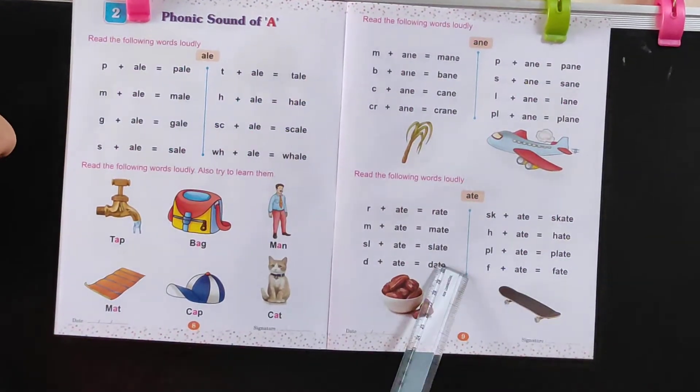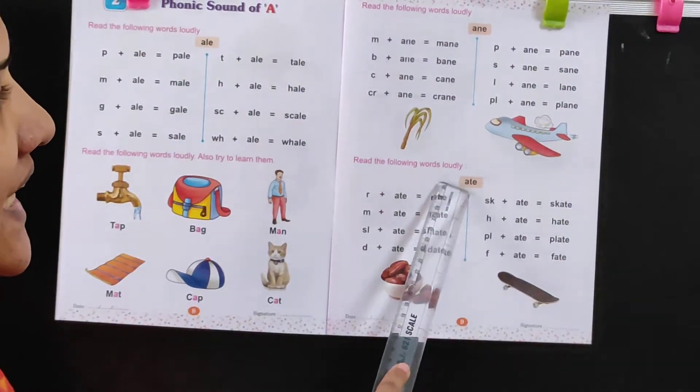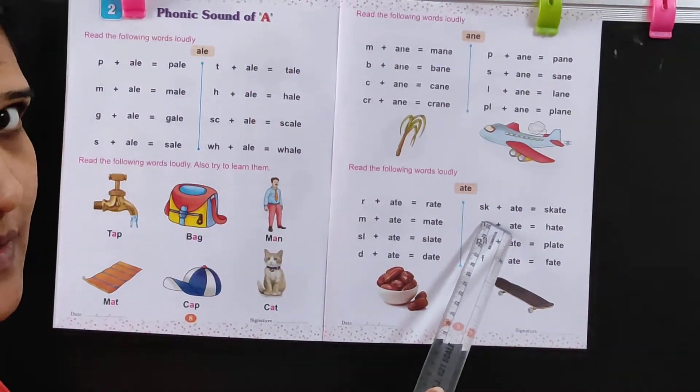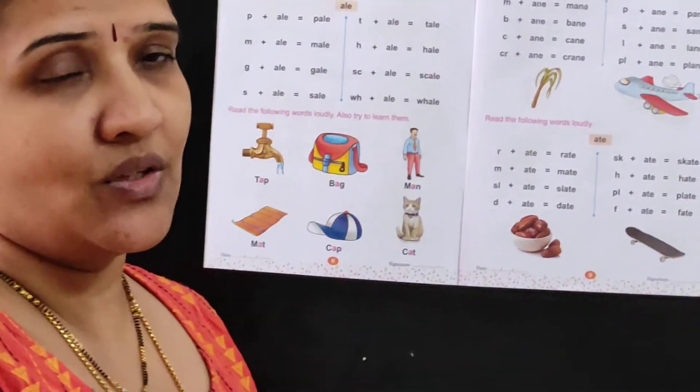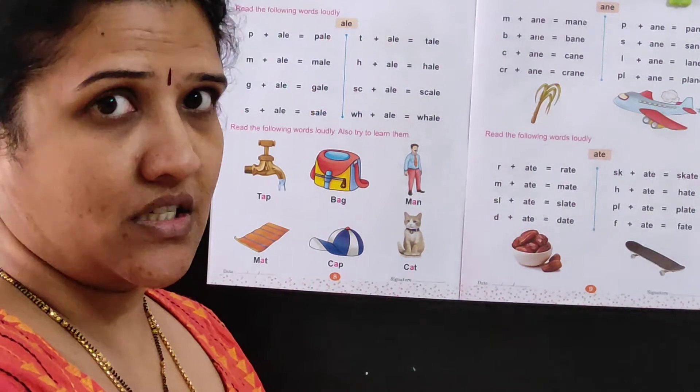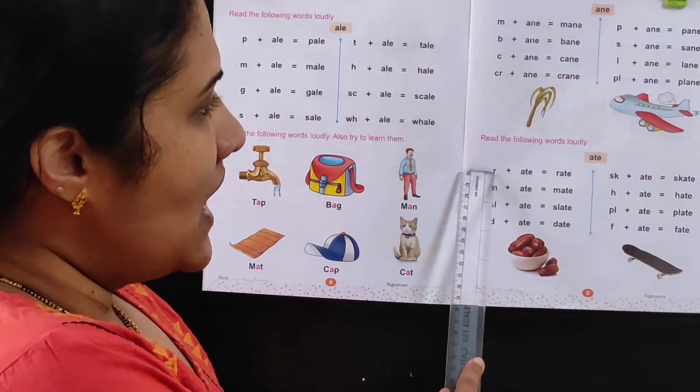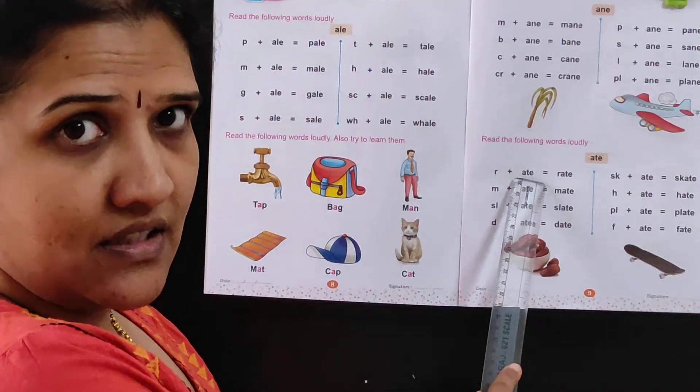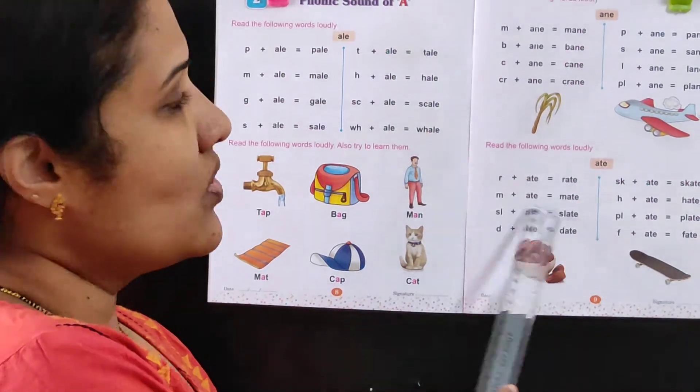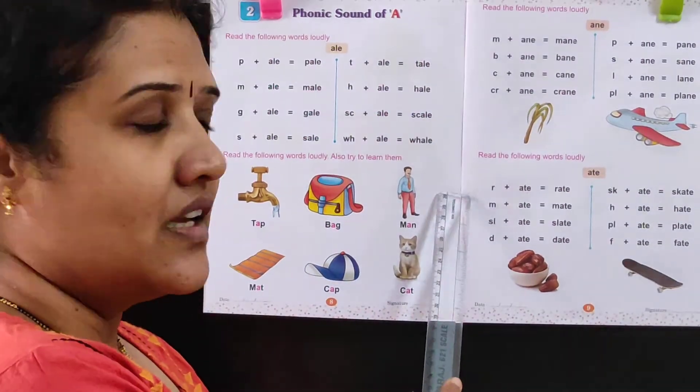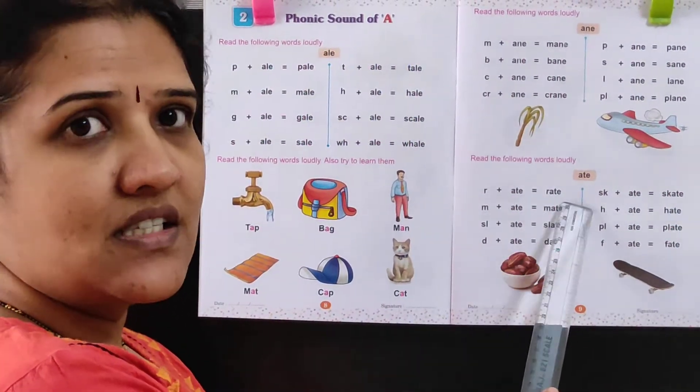Now last one. Let's see this one. A-T-E, ate. What sound is A-T-E? Ate. R plus A-T-E is Rate. What is the sound of R? R-R. R plus ate is Rate.